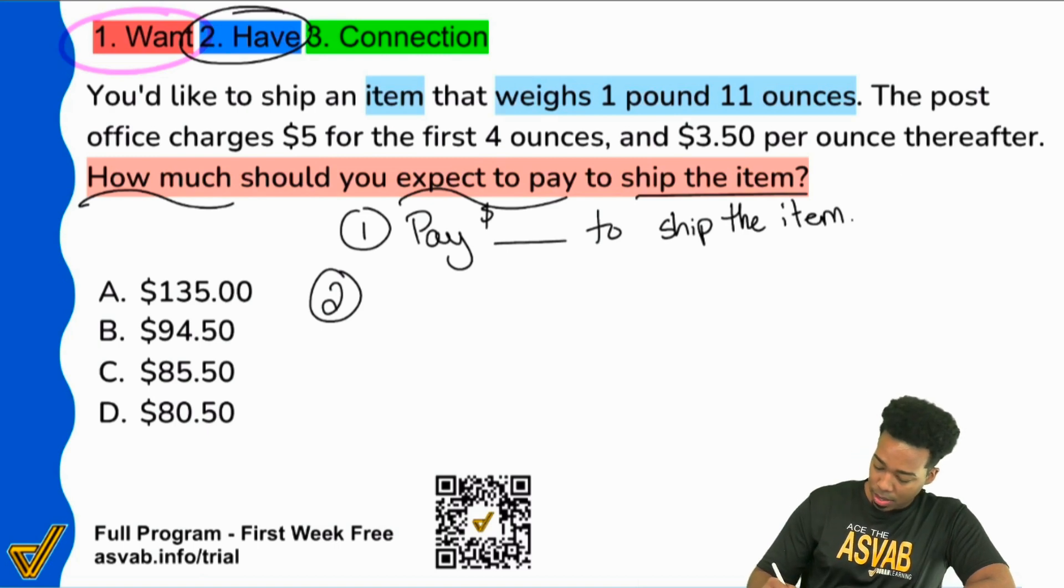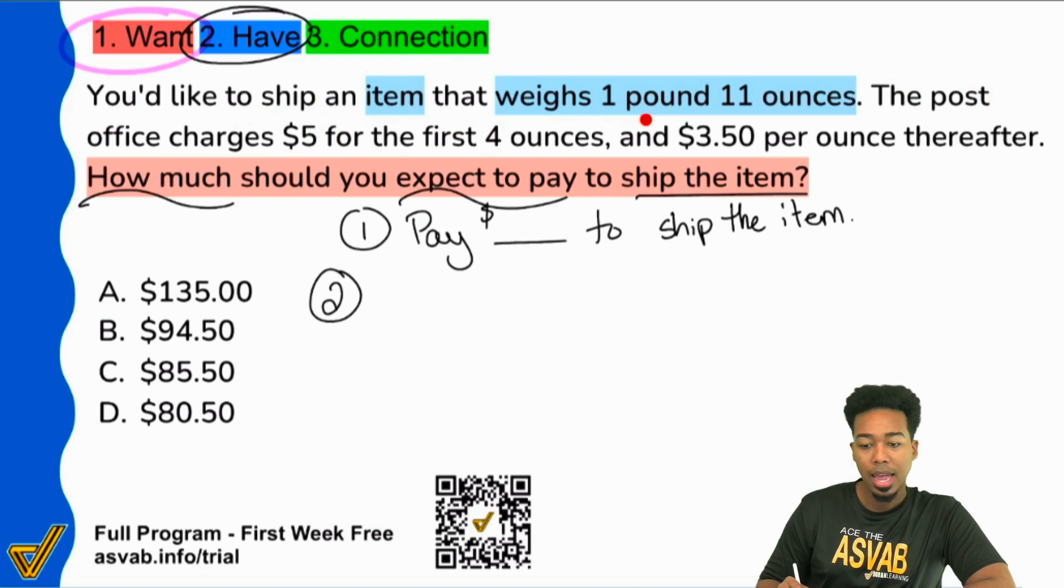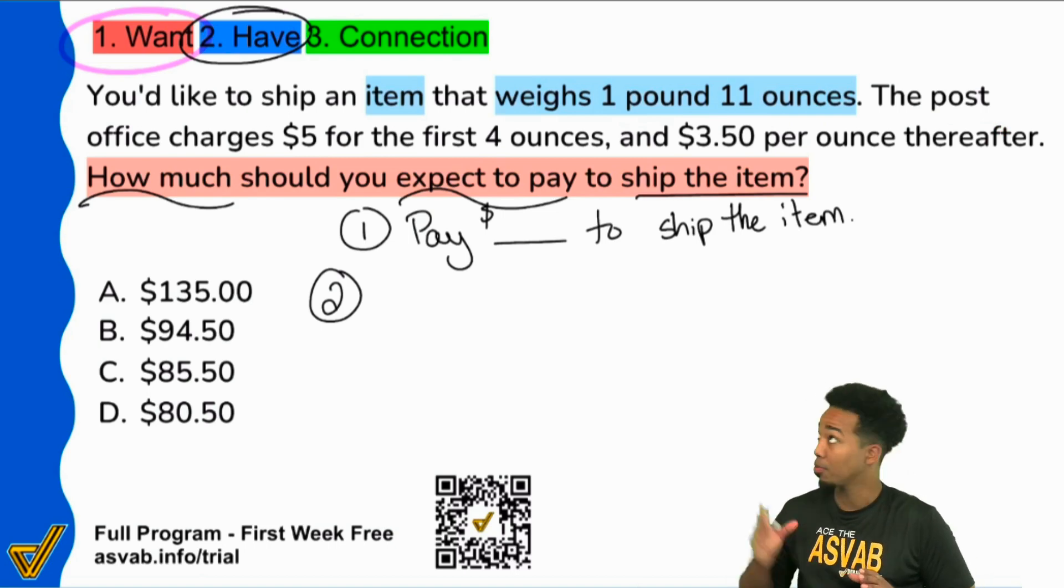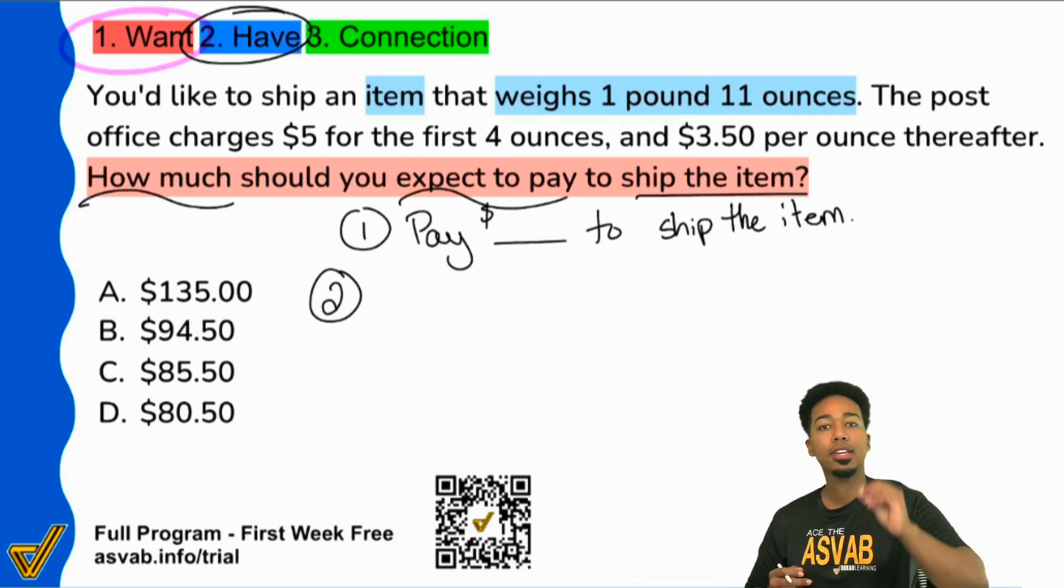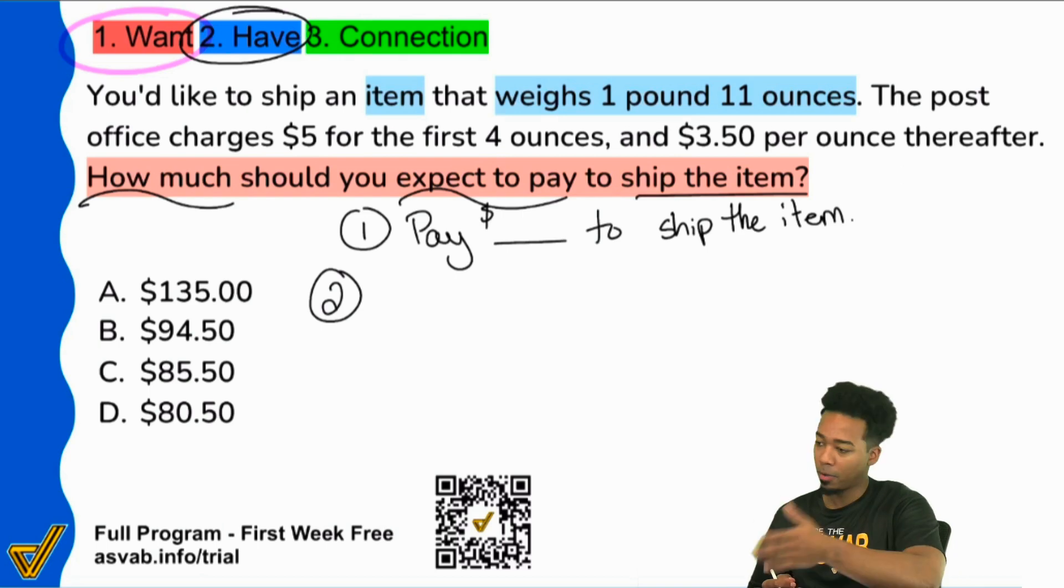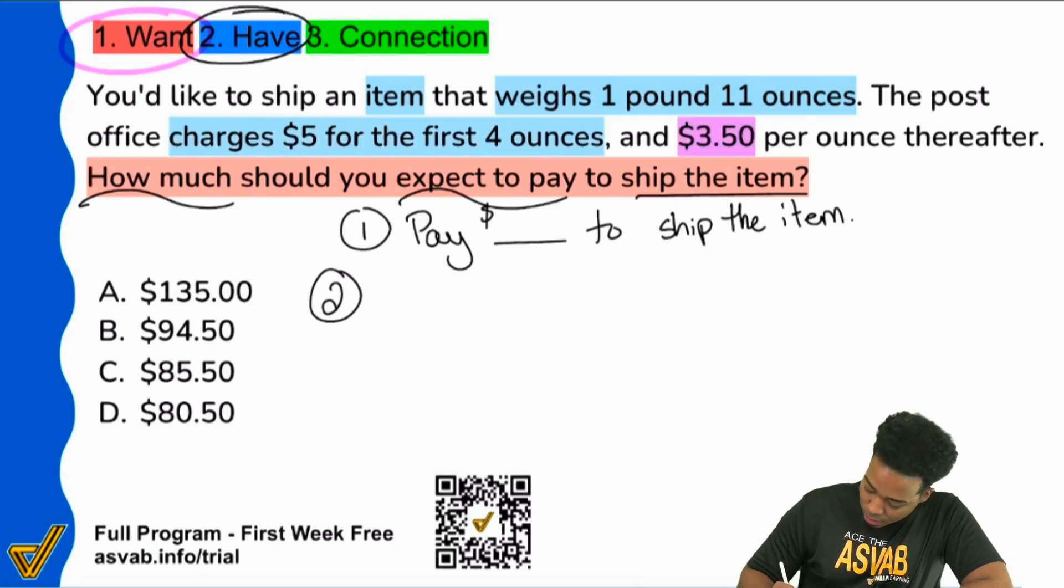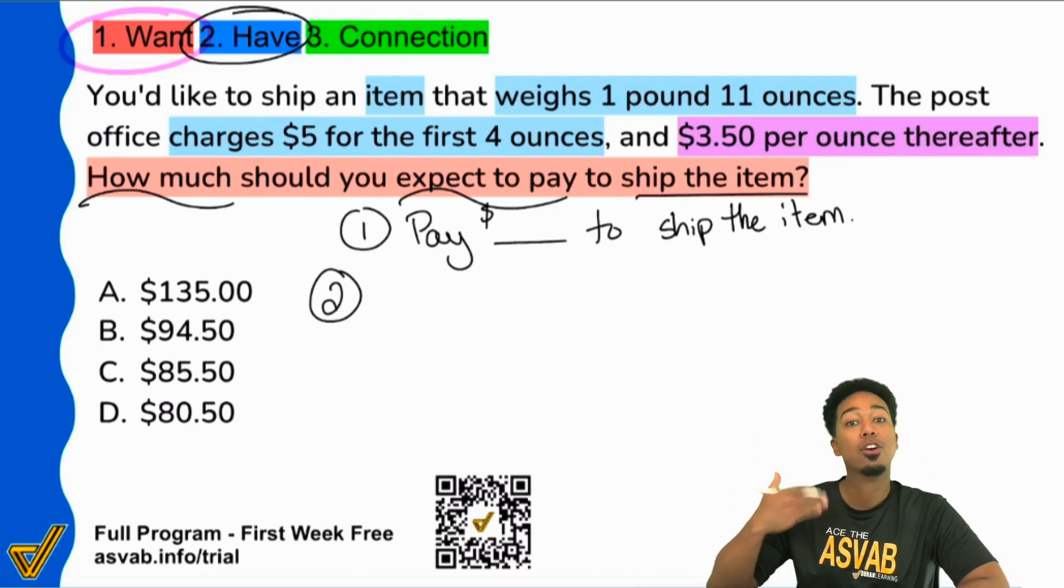Next, it says the post office charges $5 for the first 4 ounces, and $3.50 per ounce thereafter. This is a pretty big and pretty useful piece of information, because it's going to tell us exactly how we're going to get to however much we're supposed to pay. So I'm going to highlight this. Charges $5 for the first four ounces, and I'll use purple for this, $3.50 per ounce after the fact, thereafter.